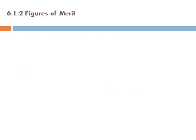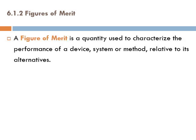A figure of merit is a quantity used to characterize the performance of a device, system, or method relative to its alternatives. If you have different devices, systems, or methods and want to know which is better compared to another, you use a figure of merit.